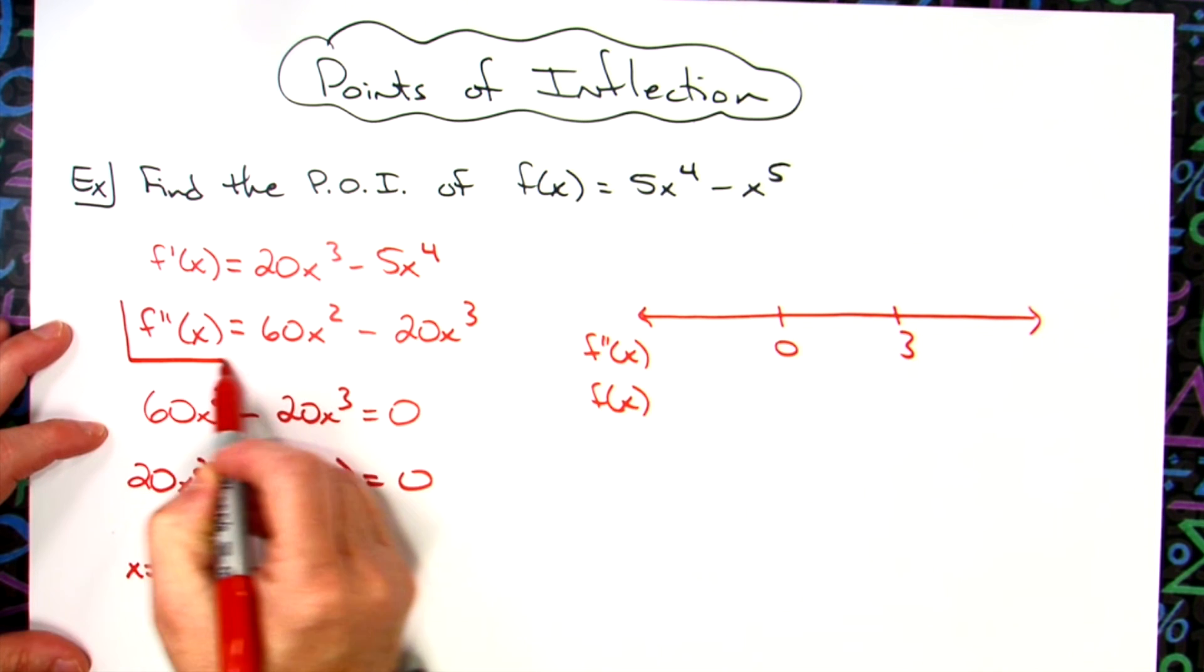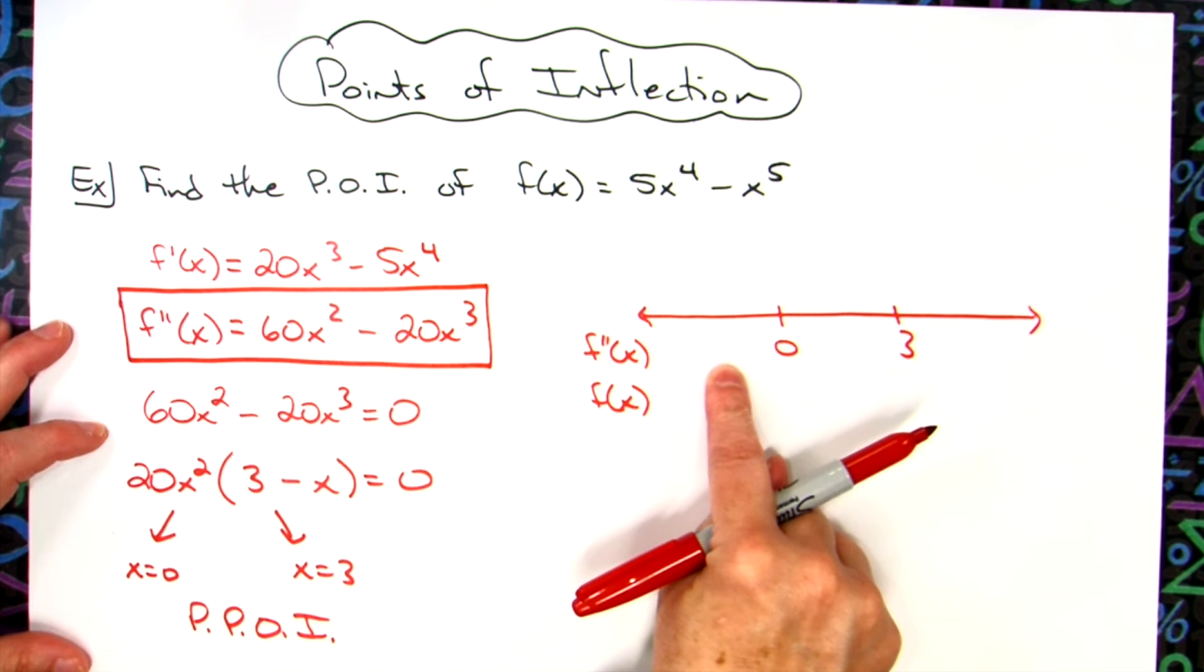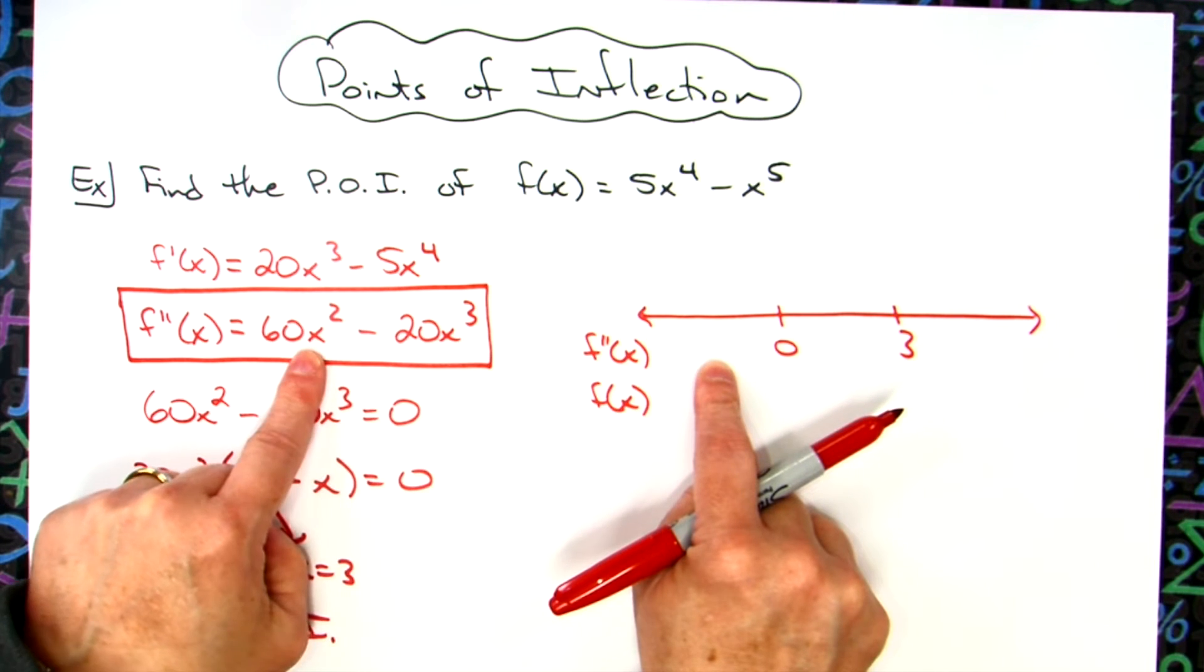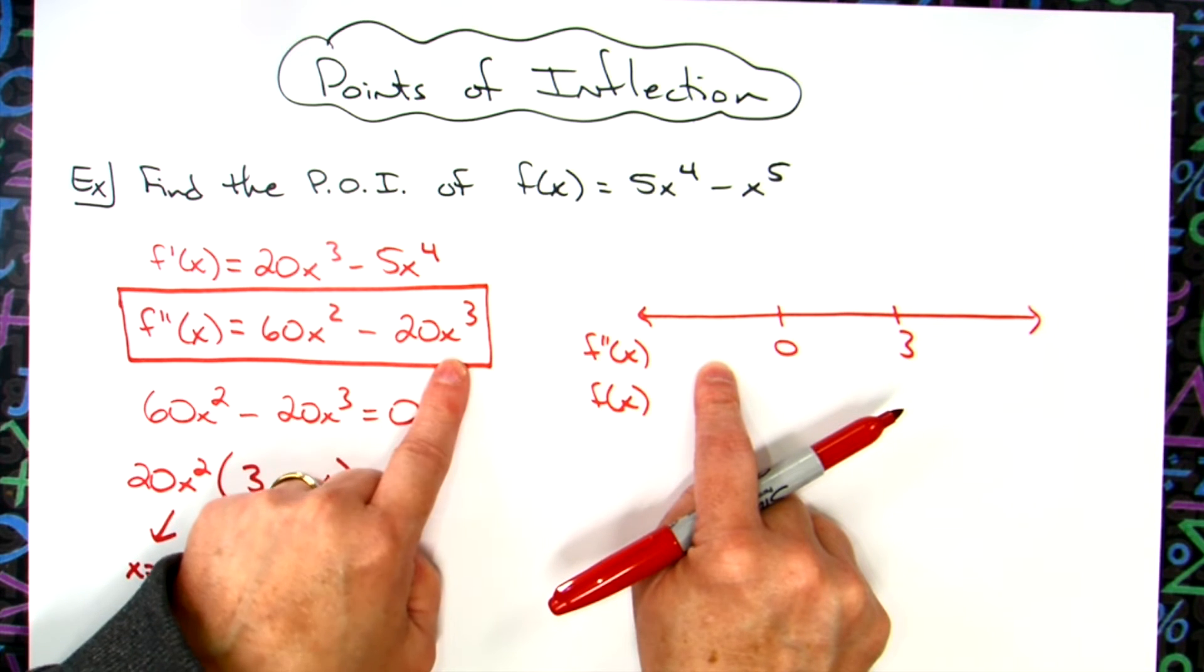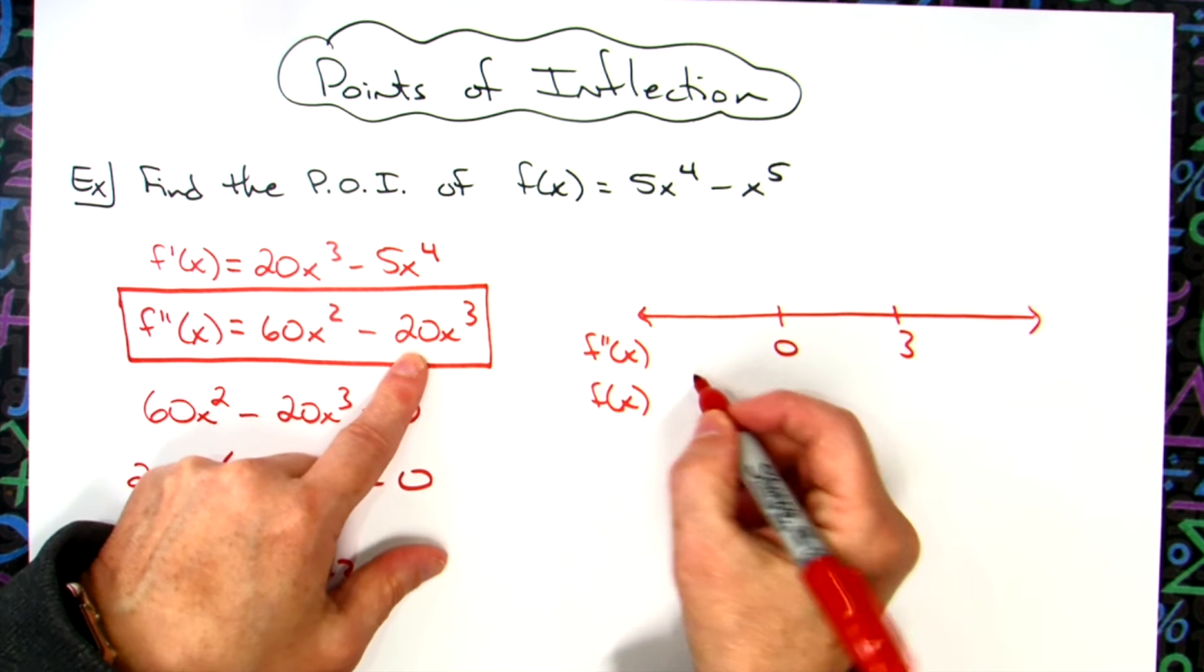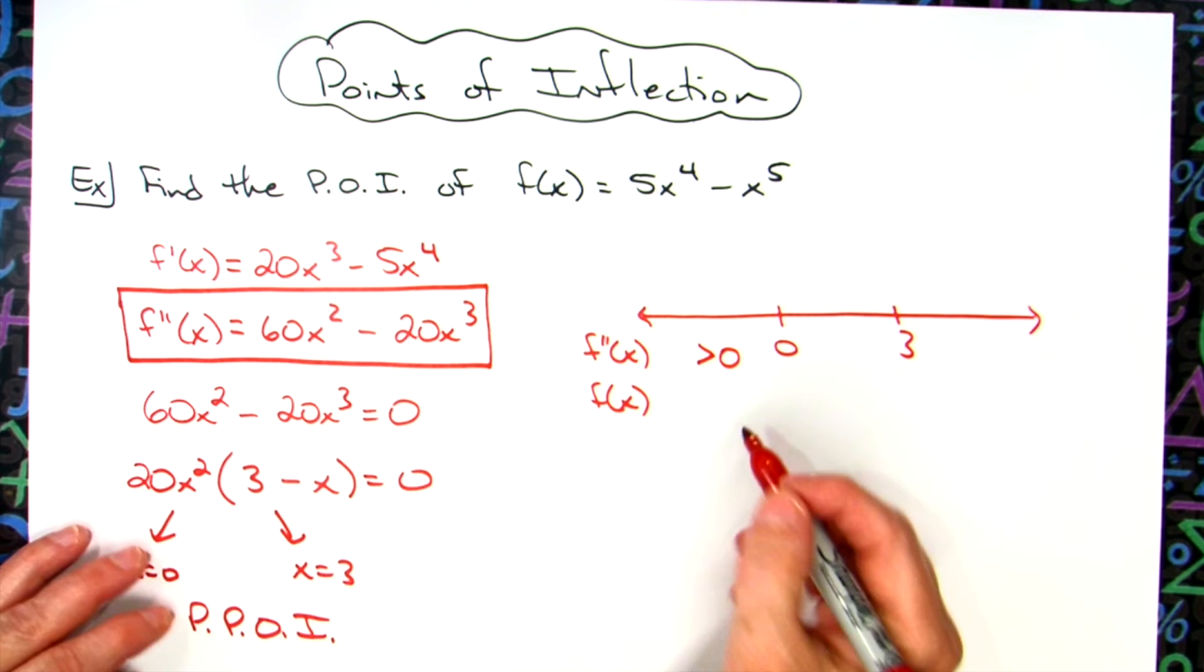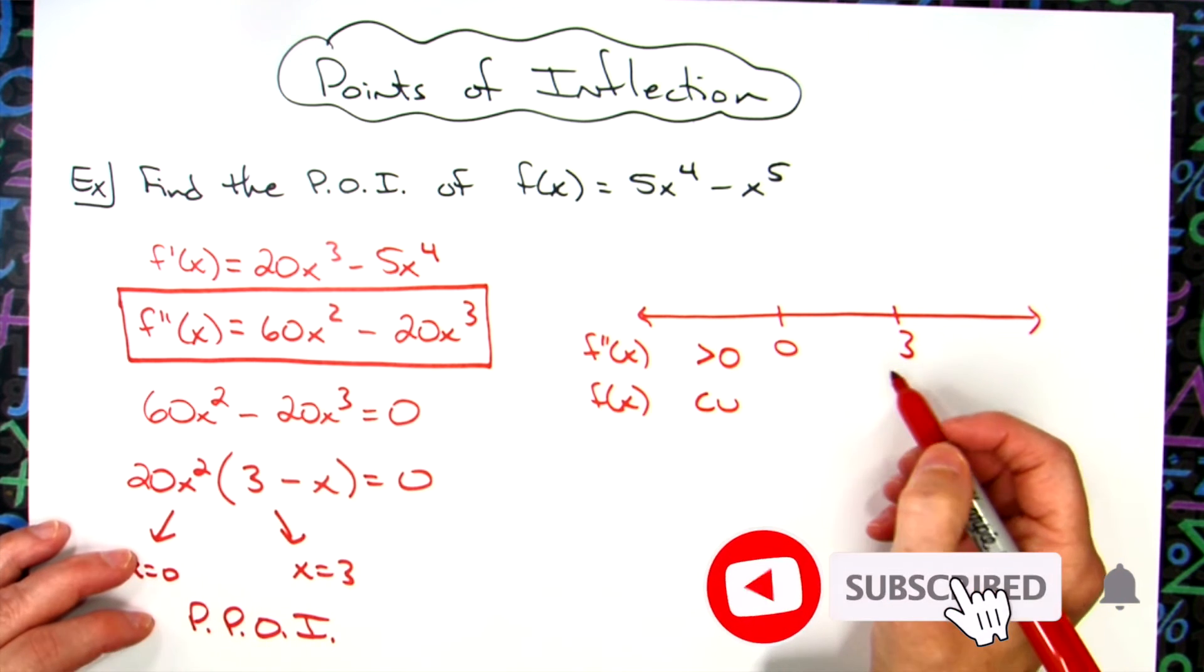So we want to look here at the second derivative. Rough estimate, you don't actually have to have an actual value here. If I take a negative number and plug it in here, when I square it, it's going to be positive. When I plug a negative number here, it'll still be negative. So I'm going to have plus plus, that's going to make this overall answer greater than zero. When your second derivative is greater than zero, the function is concave up.